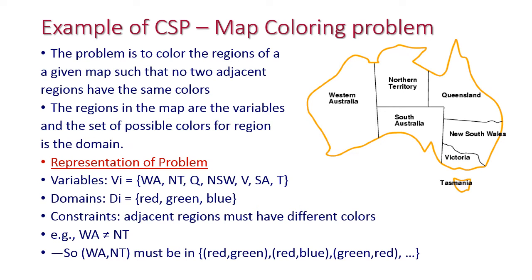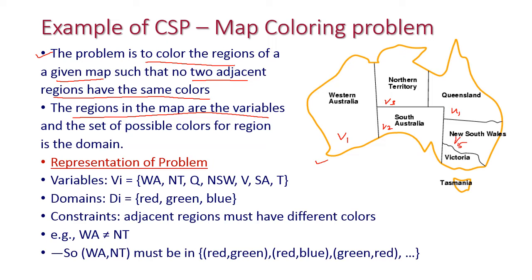Now let us see a simple example for CSP: the map coloring problem. The problem is to color the regions of a given map — here we use the Australian map — such that no two adjacent regions have the same color. The regions of the map are the variables. We have different regions as variables 1 through 7. The set of possible colors — red, green, blue — forms the domain.